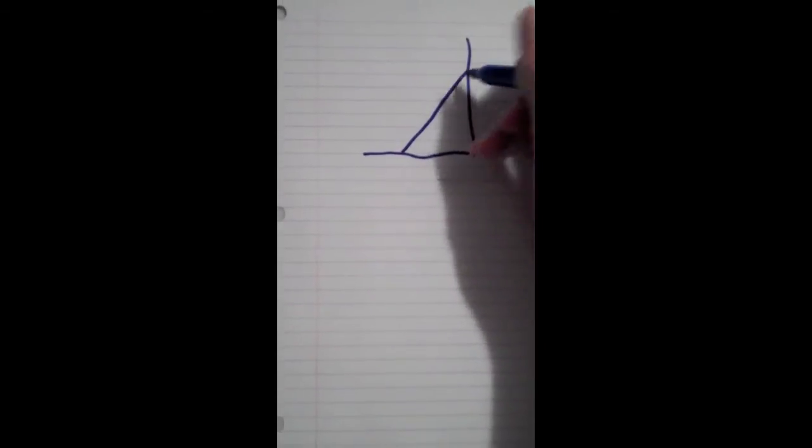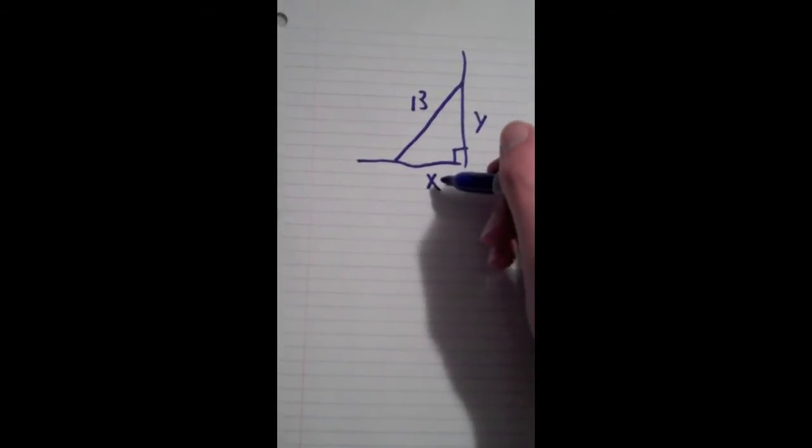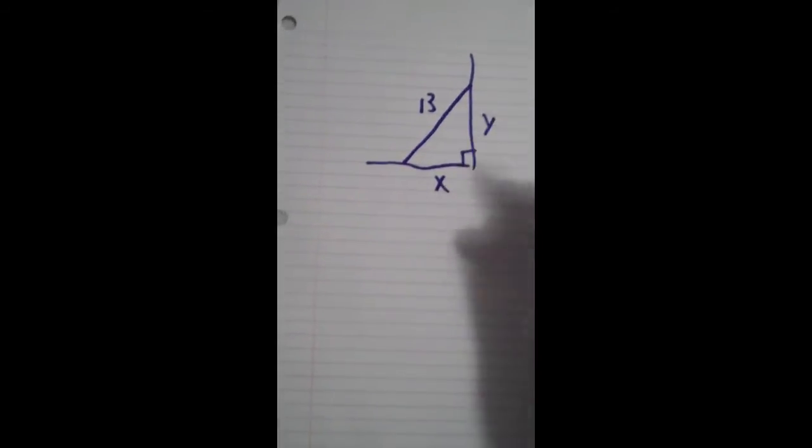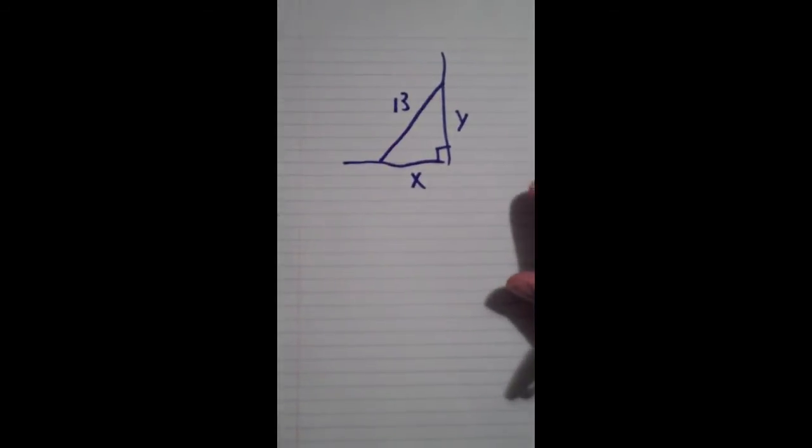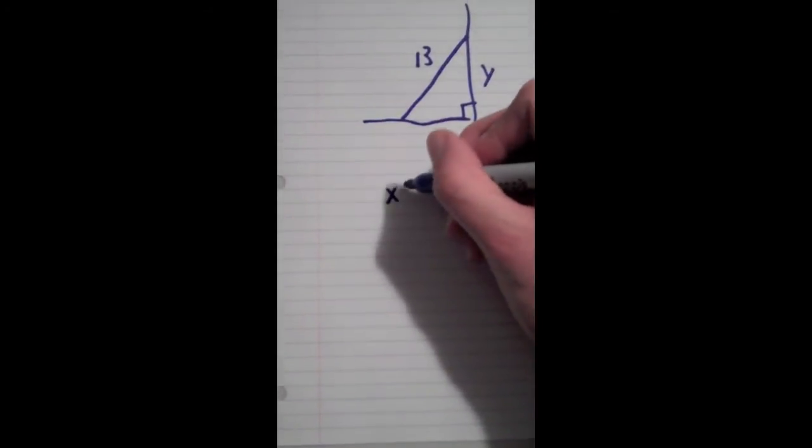And so drawing this picture again, it makes a right triangle, right, with y and x. Y is decreasing as x is increasing. The hypotenuse is constant at 13. But what's always going to be true in this right angle, regardless of x and y, is the Pythagorean theorem.